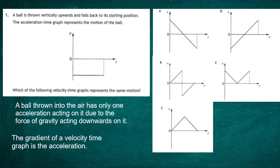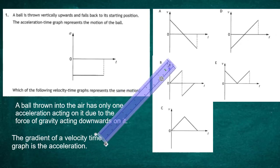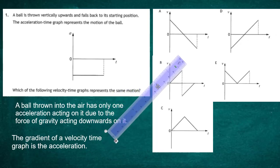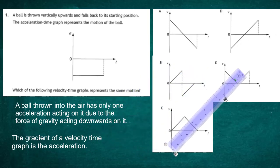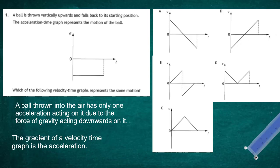We can dismiss Graph B because, while it could be argued it has two equal gradients, the key issue is that it shows the velocity of the ball increasing in the positive direction. When you throw a ball into the air, its vertical velocity upwards is positive and is gradually reduced under the acceleration of gravity acting downwards, which is negative. So we can rule Graph B out.